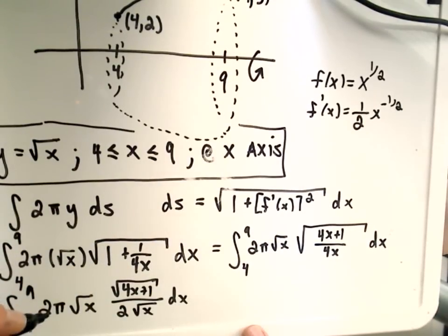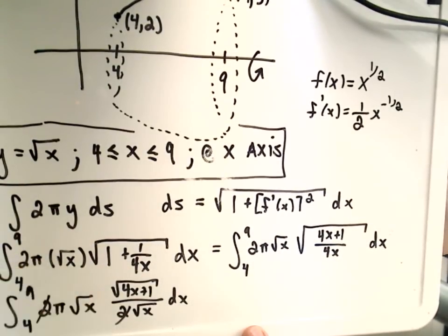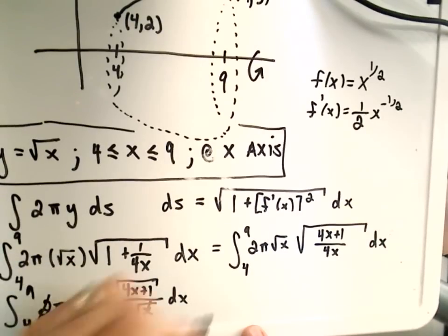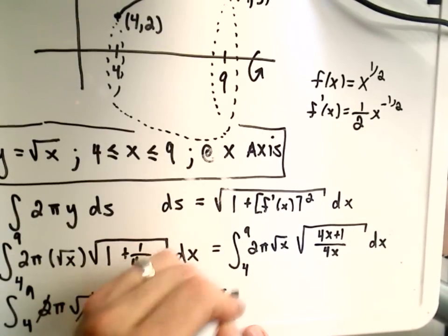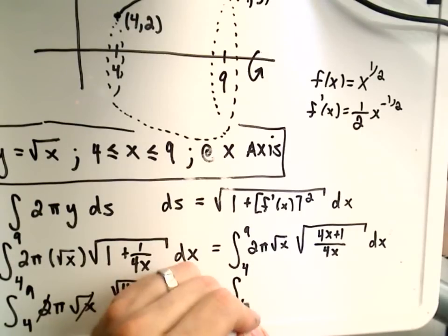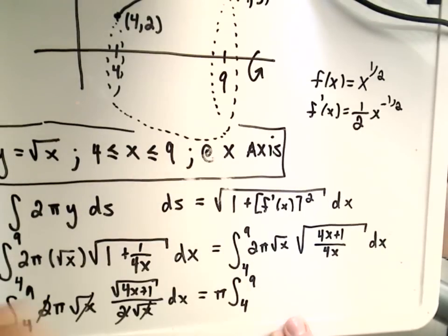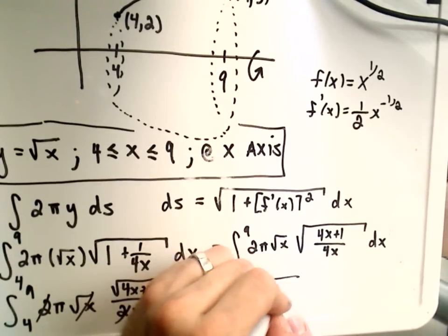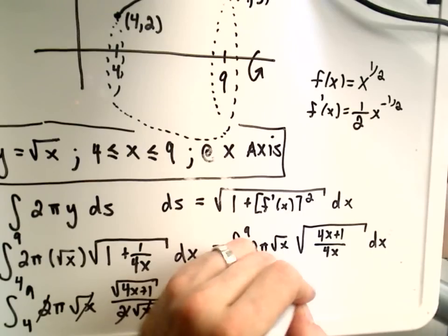Well, this is nice because now the 2's cancel. The square roots of x cancel. I'm going to go ahead and pull my π out front. I've got 4 to 9. And then I'm just simply left integrating 4x plus 1 dx.